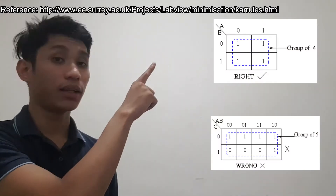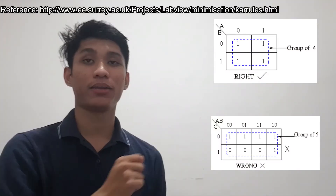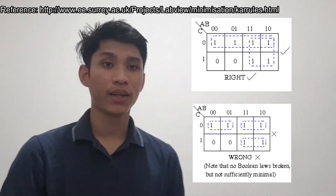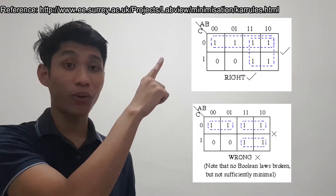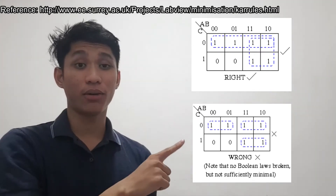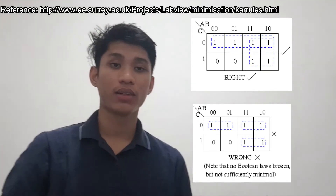Here is the right one and this is the wrong one. For our third rule, each group should be as large as possible. Here is the right one and this is the wrong one.